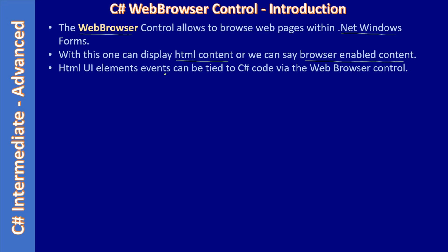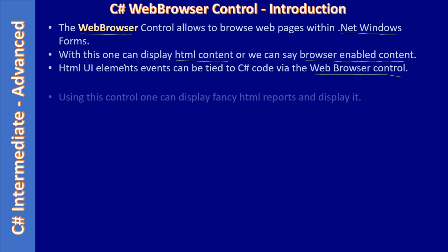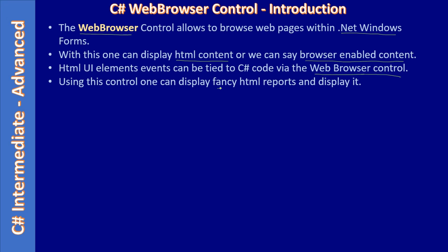HTML UI element events can be tied to C# code. For example, if you are displaying a report that contains buttons and those HTML buttons are clicked, you can perform actions in C# code. Since the Web Browser control is placed on a C# Windows Form and is displaying HTML with buttons, when a button click happens the click event can be handled in the C# application domain, making rich functionality available.